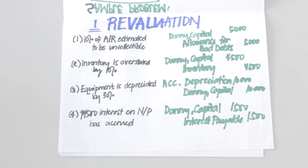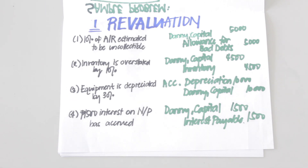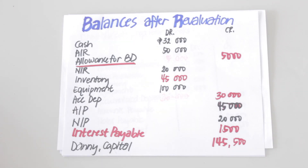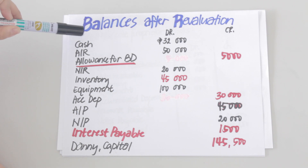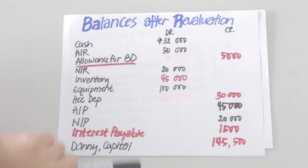Lastly, we have the accrual of interest on notes payable. The normal adjusting entry would be to debit accrued interest expense and credit interest payable. However, we need to replace nominal accounts with the capital account. The correct entry is to debit Danny capital and credit interest payable for 1,500 pesos.